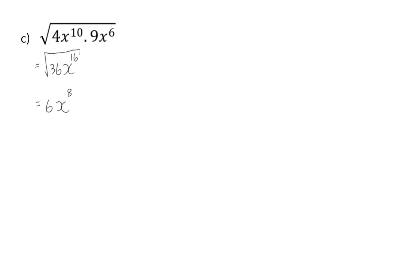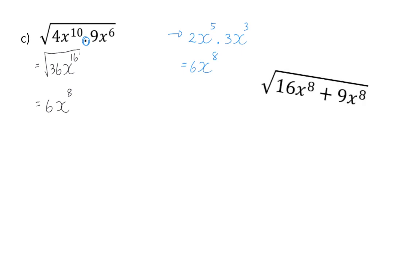Note the difference between examples B and C. In C we have multiplication, which means it is one term, so you are allowed to first take the square root of 4x to the power of 10 — which is 2x to the power of 5 — and then multiply by the square root of 9x to the power of 6, which is 3x to the power of 3, giving 6x to the power of 8. When everything is one term — multiplied or divided — the order of calculation doesn't matter. In B we had more than one term because of the plus, which is why we had to simplify the inside first.